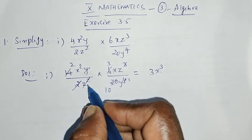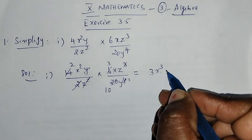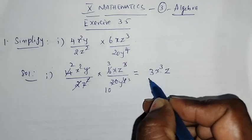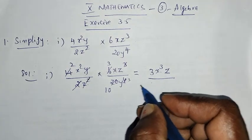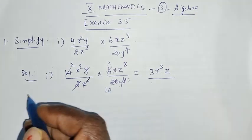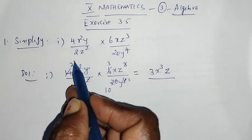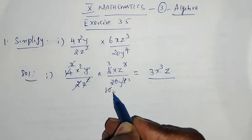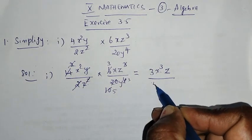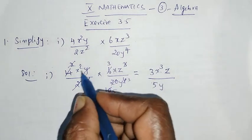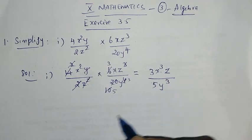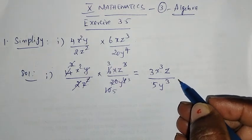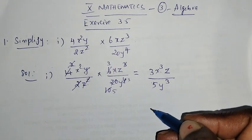z² is here. This is 2, we can cancel 1, 2s are 2, 5, 2s are 10. This is Y, this is Y to the power 4, we can cancel the Y cube. That is 3X cube divided by 5Y cube.